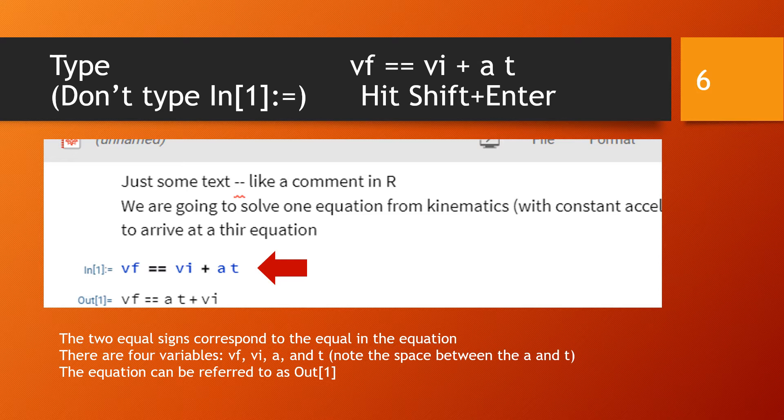There's a space between the a and the t so that is two variables, a for acceleration and t for time. If you want you can put explicitly in an asterisk to do the multiplication. You do not type the In[1] or the Out[1] but after you've typed the equation you hit shift enter at the end of the cell and it gives you the input and the output and in the output it slightly rearranged our equation.